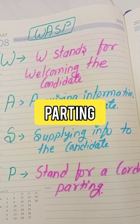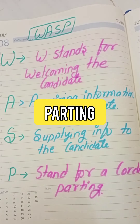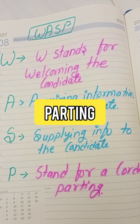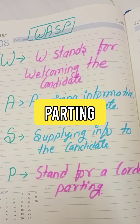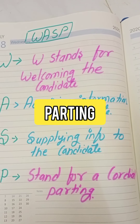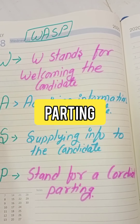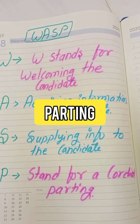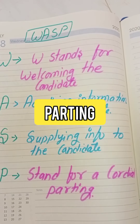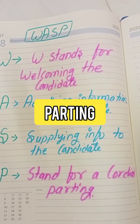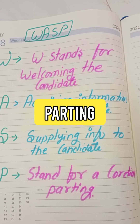So to summarize, it is very necessary to use the word WASP: W for Welcoming the candidate, A for Acquiring information, S for Supplying information, and P for Parting. You will definitely want to convey the result information during the parting stage. Thank you.